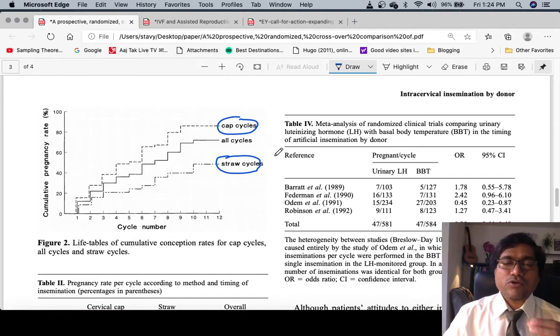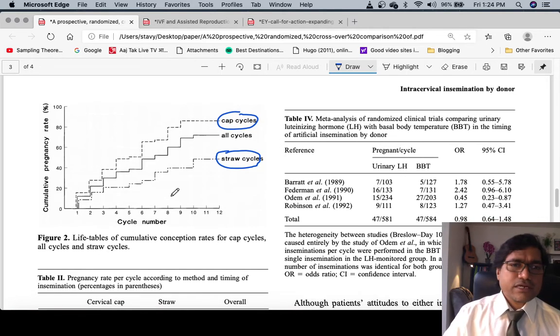So let's see the success. The X-axis shows the number of cycles - first cycle, second cycle, third insemination. These women have gone through 12 cycles, and the Y-axis shows how many became pregnant - the percentage, the success rate.